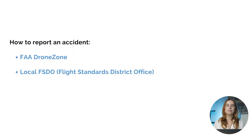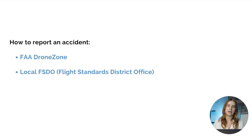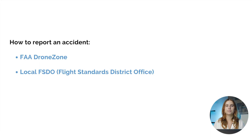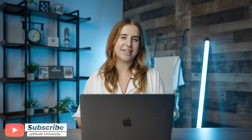However, if we do find ourselves in an accident, there are two ways that we can report that to the FAA. The first is utilizing their website, the FAA Drone Zone, or secondly, you can contact your local FSDO, or Flight Standards District Office. Thank you for joining us and remember to fly safe.